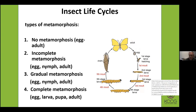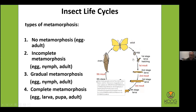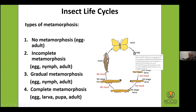Here you can see the diagram of complete metamorphosis with the butterfly or moth, going through all those different stages. Sometimes there will be two, three, even four or five larval stages where they molt. You can see what the pupa looks like — what we used to call a cocoon. Sometimes that language is still used, and then of course it turns into an adult.